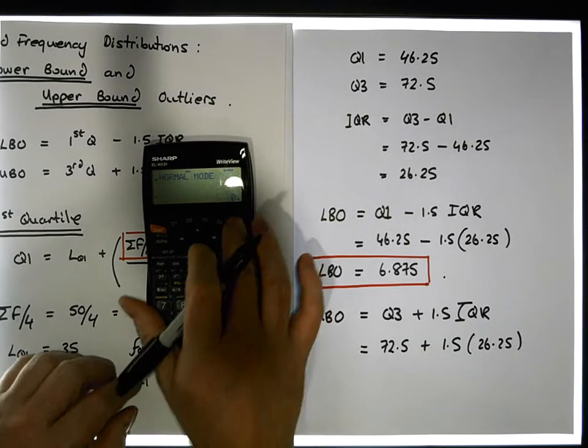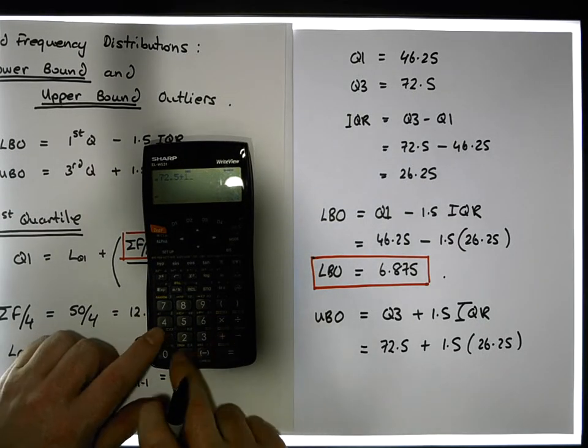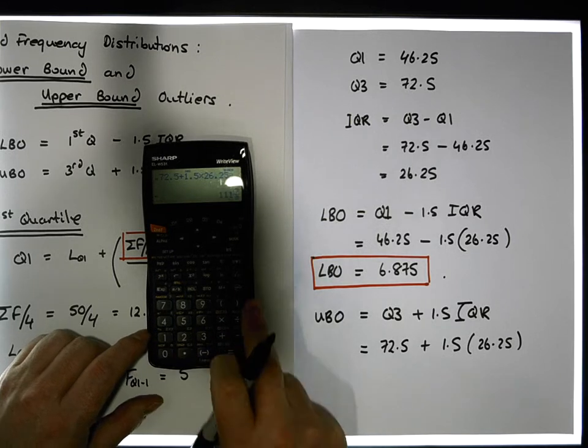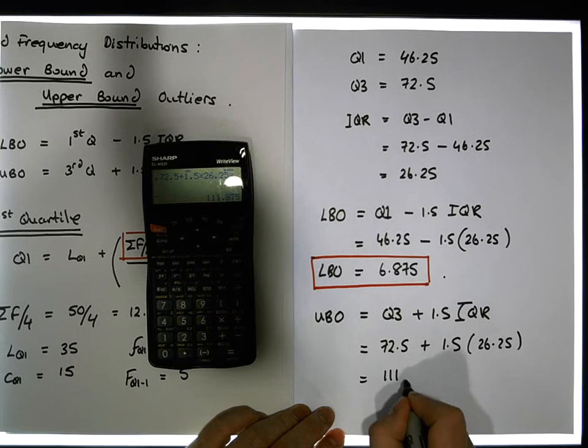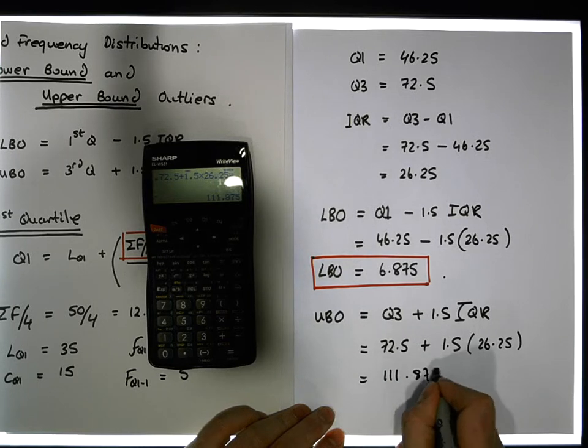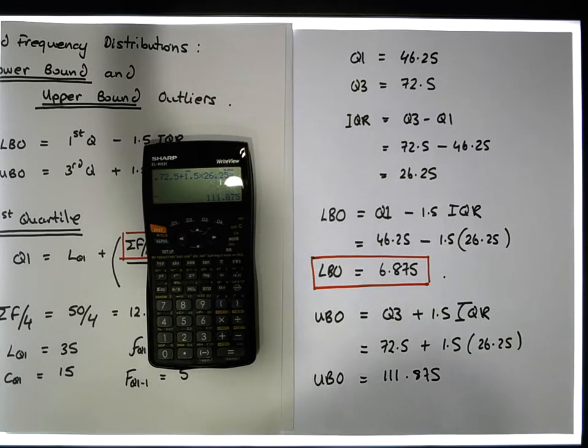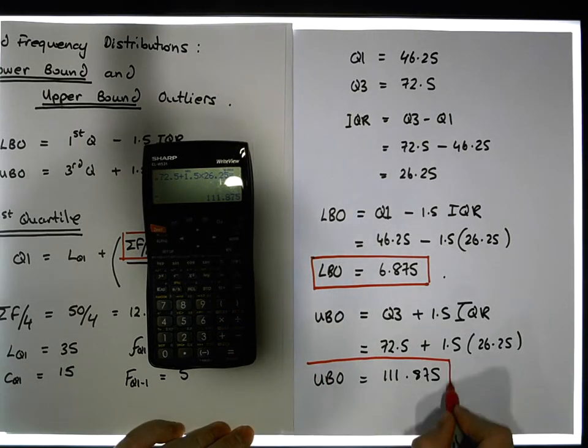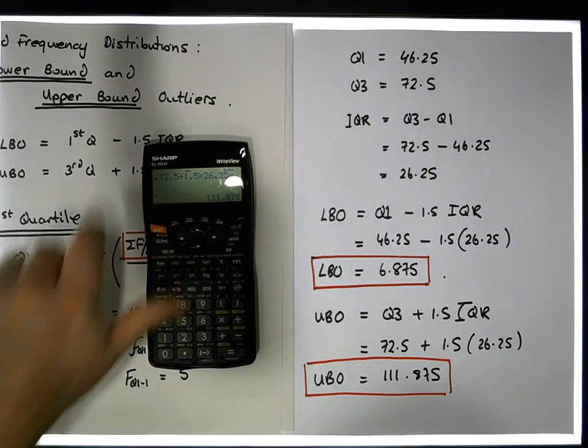So when we work that out here, we'll just do that in one go. So we have 72.5 plus 1.5 times 26.25, gives us a value of approximately 111.875. And that's our upper bound outlier position. So what we have now is that we have any value greater than this in our data set is classified to be an upper bound outlier.